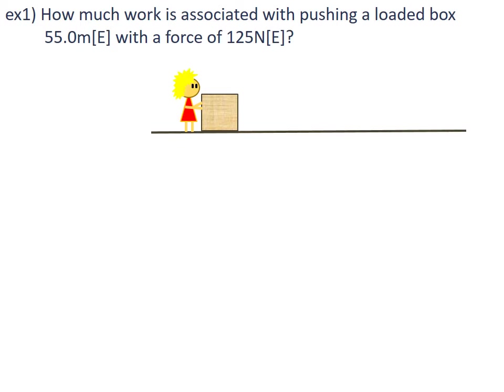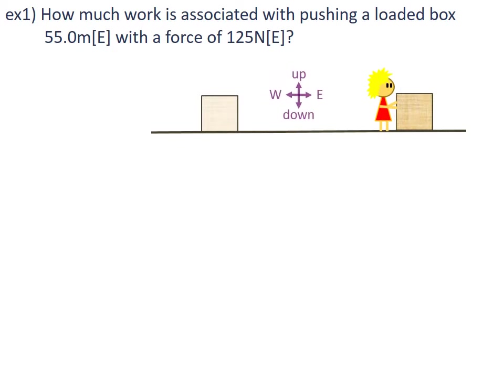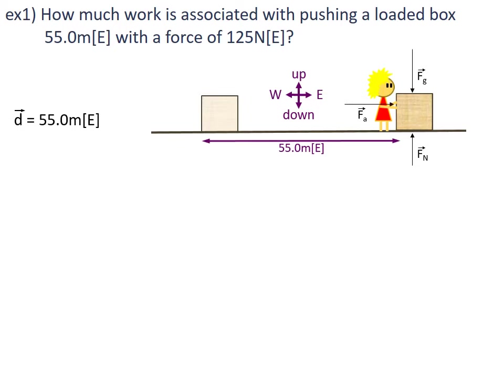Example 1: How much work is associated with pushing a loaded box 55.0 metres east with a force of 125 newtons east? The box has been displaced 55.0 metres east. We know there's a force of gravity pushing down, normal force pushing up, an applied force of 125 newtons east, and some sort of friction working against it.